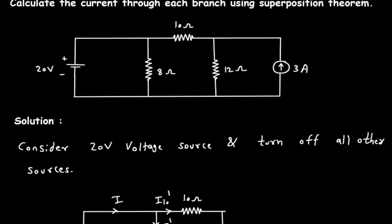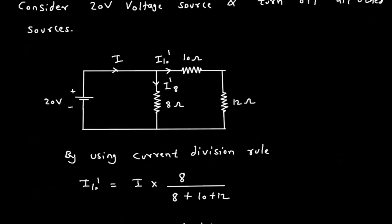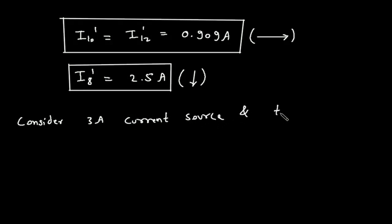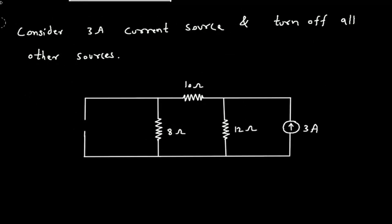Now we will consider the 3 ampere current source and turn off the voltage source. Turning off the voltage source means it becomes a short circuit. We can see that the 8 ohm resistor will also be short-circuited, so its value will be zero.